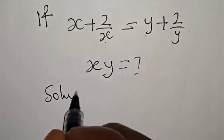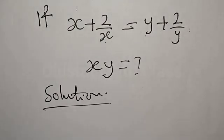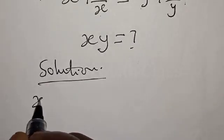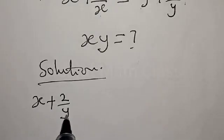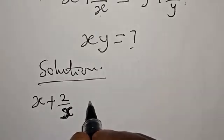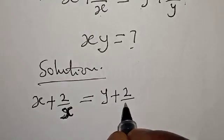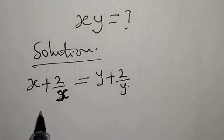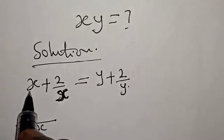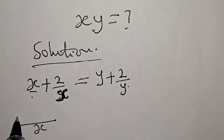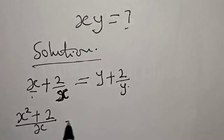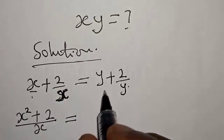Solution: we have x plus 2 over x is equal to y plus 2 over y. What we do is find the LCM of each side. From the left side the LCM is x, so this is over 1; 1 goes into x is x, x times x we have x squared, plus x goes into x is 1, 1 times 2 is 2.